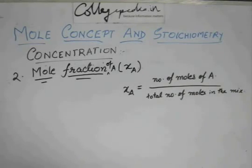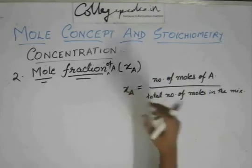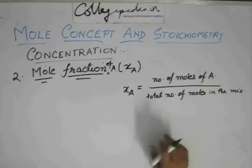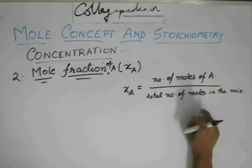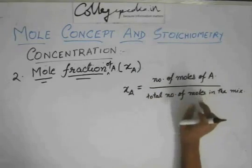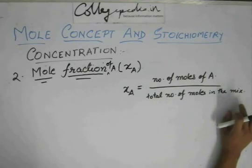So if there is a mixture containing various components like A, B, C, if you want to find the mole fraction of A then it is nothing but the number of moles of A divided by the total number of moles in the mixture.